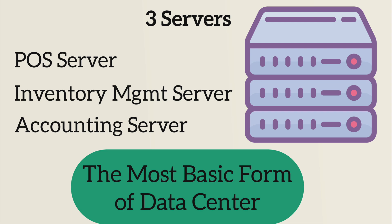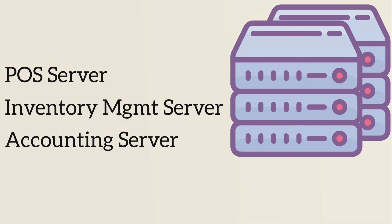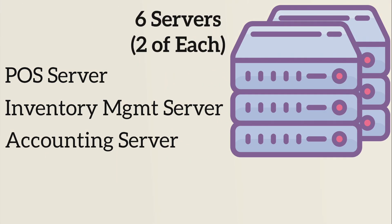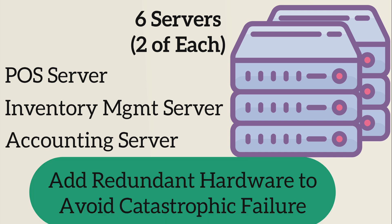That's three physical servers altogether. This could be considered the most basic form of a data center. Now, Bob needs to have a duplicate of each server, because what if the one server he had for running POS dies? Well, his POS system is going to be down, and that is not acceptable. He needs to be able to charge his customers because Bob is crushing it — a lot of people are buying coffee. So he needs to have redundant servers to avoid going out of business.